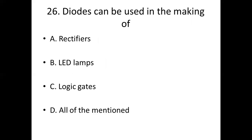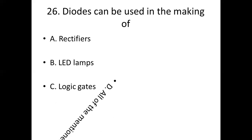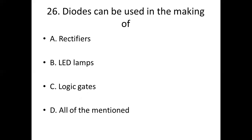26th bit. Diodes can be used in the making of: Option A: rectifiers. Option B: LED lamps. Option C: logic gates. Option D: all of the mentioned. Answer: Option D, all of the mentioned.